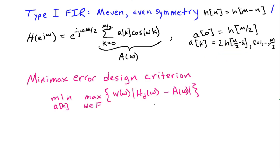The minimax error design criteria is that we choose a filter. In other words, we design the AKs so that we minimize the worst case error over some range of frequencies, omega in a set F. And we're defining the error here as the difference between a desired response, HD of omega, and our actual response, A of omega, which is a function of the AKs.